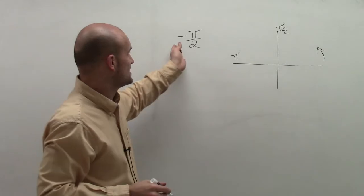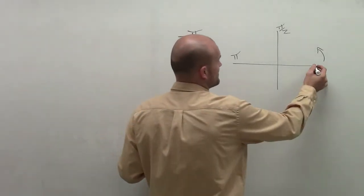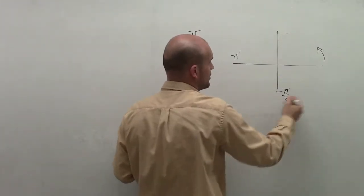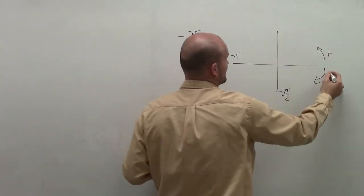However, we're trying to graph a point that's at negative pi halves. So therefore, that's going to be down here, if we're going in the negative direction.